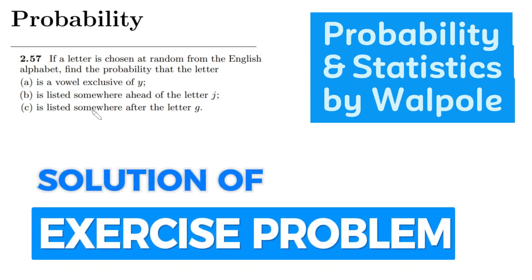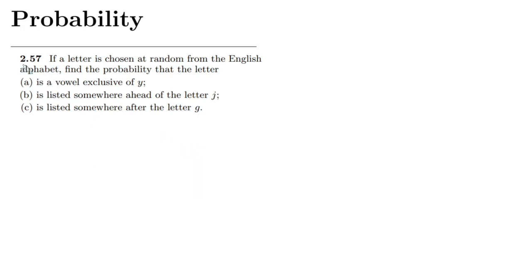Hello guys, I hope all of you will be fine. This is question 2.57 and the statement of this question is: if a letter is chosen at random from the English alphabet, find the probability that the letter is a vowel, exclusive of Y. So we are not including Y in the vowels, and Y is already not included in the vowels as well.